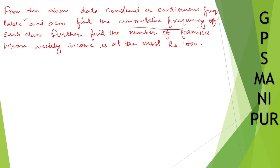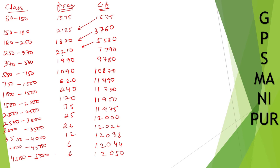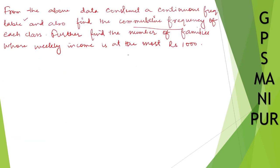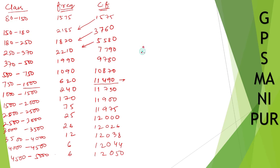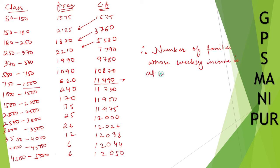Further, we need to find the number of families whose weekly income is at most 1,000. From the cumulative frequency table, we look up the cumulative frequency up to the class that includes 1,000. The cumulative frequency there is 11490. Therefore, the number of families whose weekly income is at most 1,000 is 11490.